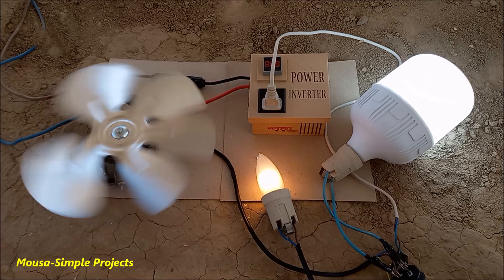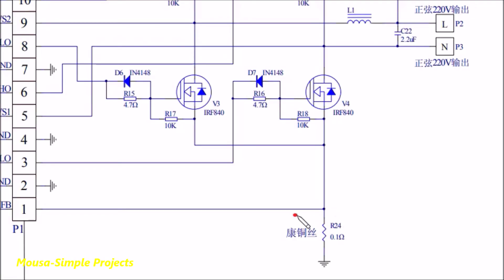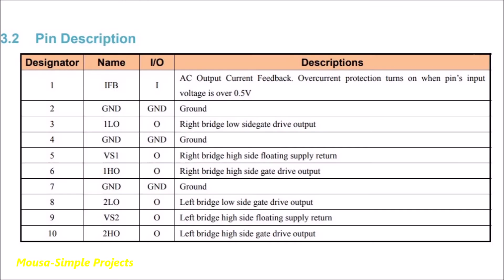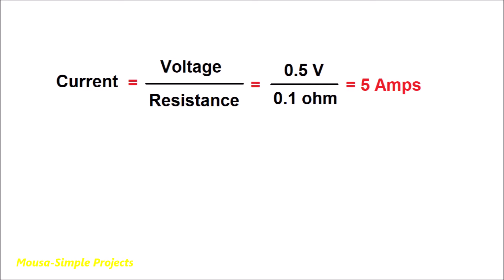Maybe you're wondering how much is the maximum power of this inverter. It depends on your MOSFETs, but keep in mind that this circuit has a resistor as current sensor. According to this datasheet, when the voltage across this resistor becomes more than 0.5 volts, the overcurrent protection activates. The value of this resistor in this circuit is 0.1 ohm. So according to Ohm's law, the maximum current could be 5 amps, which is 1.1 kilowatts.